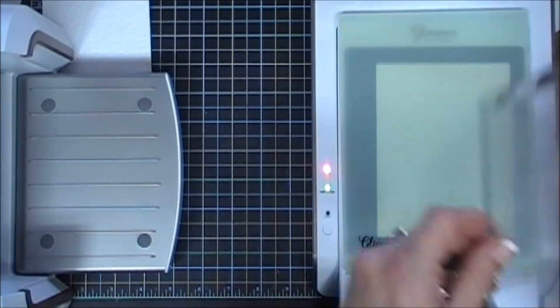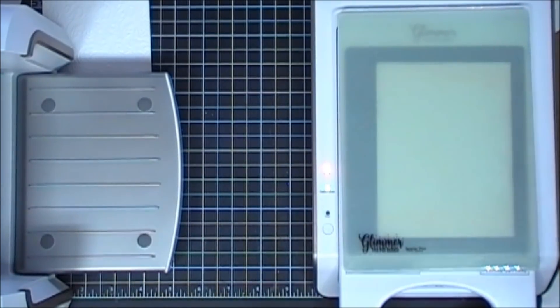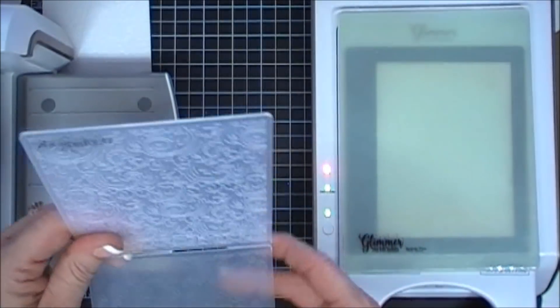Now we build our sandwich with the shim plates and then our top plate, and then we press the timer and it will be ready when my timer starts flashing. So we have a little bit more time, so while my plates are heating up we are going to emboss.